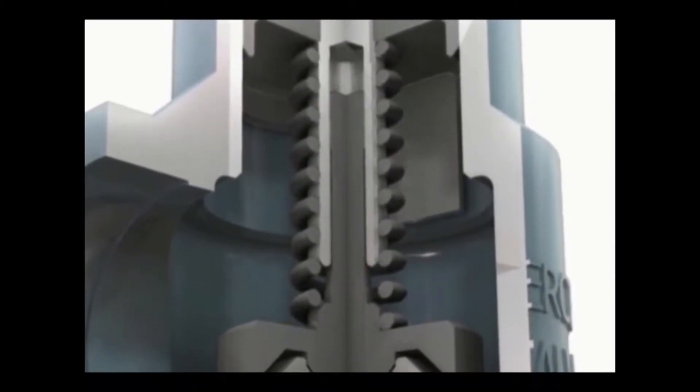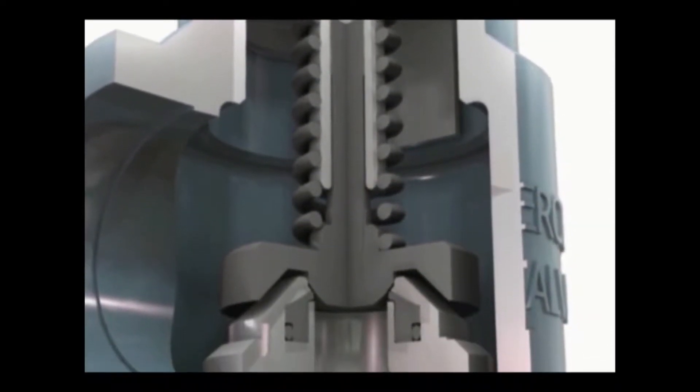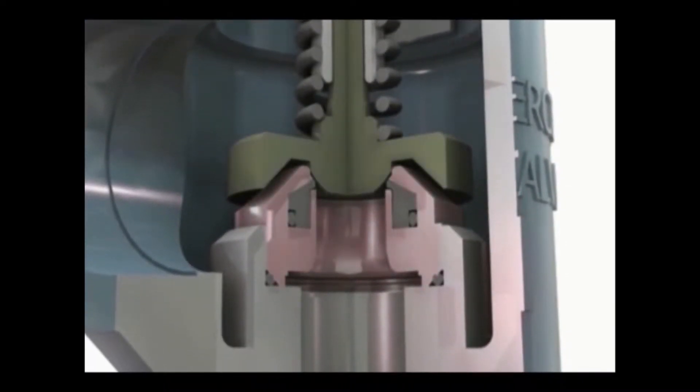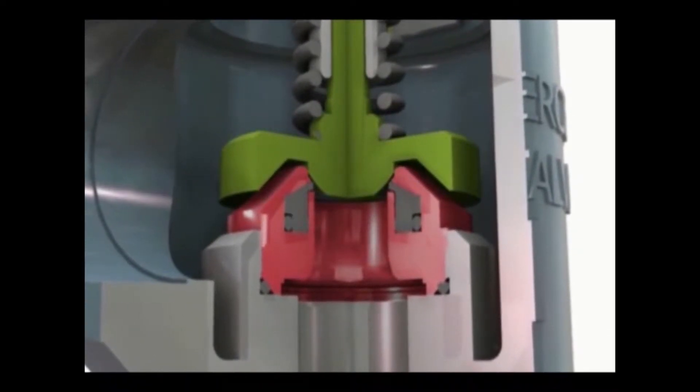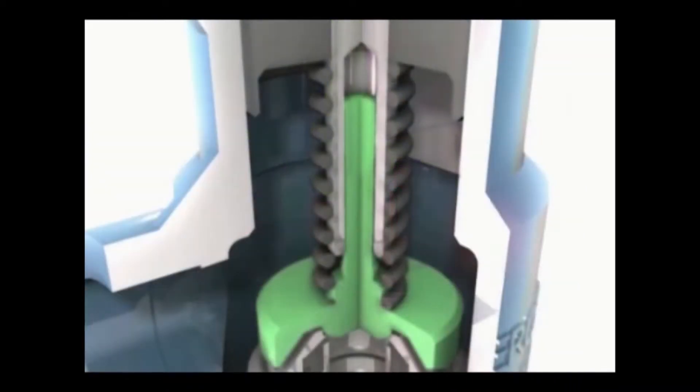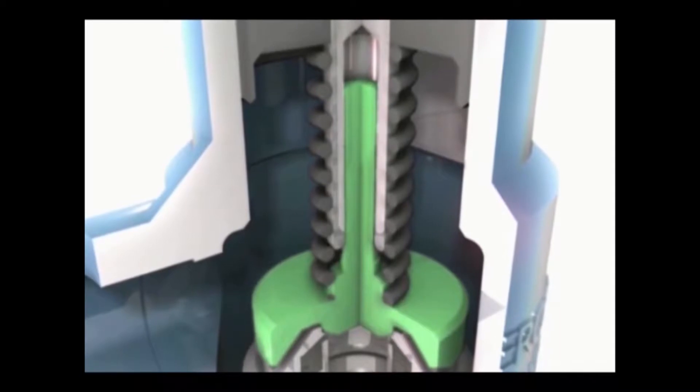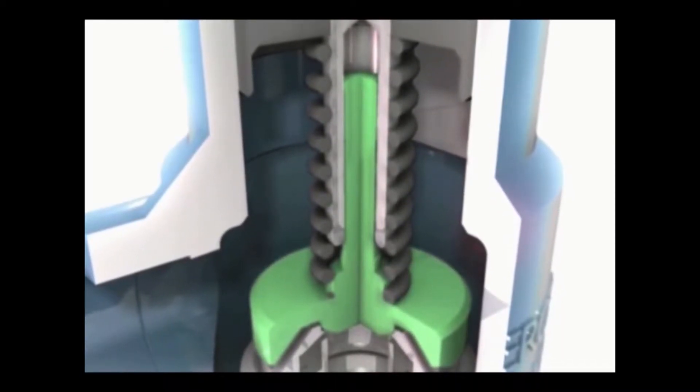With Auto-Seat Technology, the fully guided disc aligns the disc with the nozzle to allow the disc to open, close, and seat and seal each and every actuation. The disc stem is guided through the center of the adjustment screw and the bottom of the disc is radius to align with the nozzle.